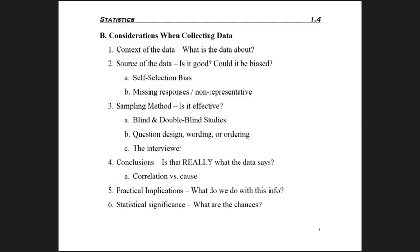A second problem is the source of the data — is the information actually coming from a reliable source? Point 2A talks about self-selection bias. If a website says 'vote here for your favorite actor' and only passionate fans bother to vote, the results may show John Smith as the number one actor even though most people haven't met anyone who likes him. Had the study clarified 'of the people who voted on our website,' that would have helped correct that self-selection bias.